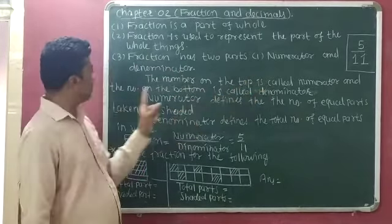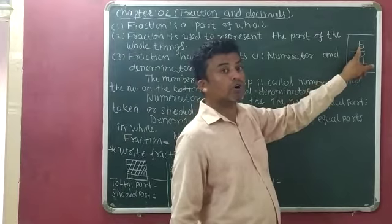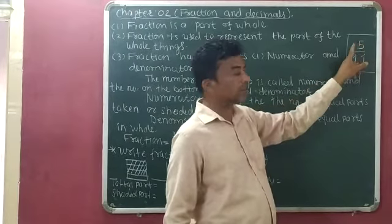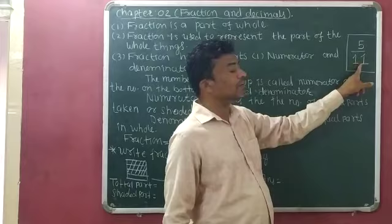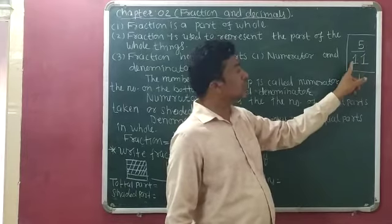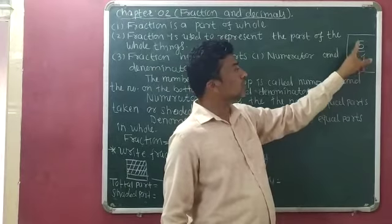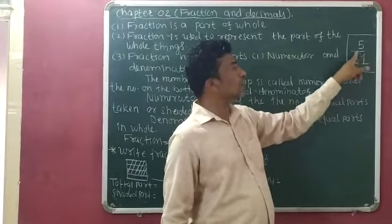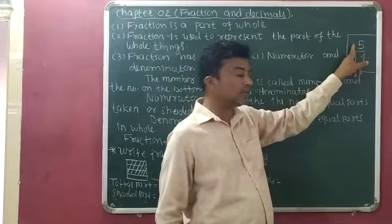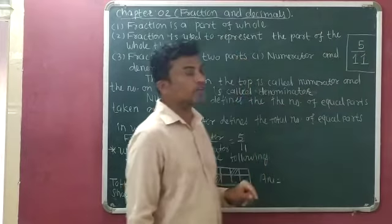See children, take 5 by 11. Here 5 is available on top, so 5 is the numerator, and 11 is available on the bottom, so 11 is the denominator. So in 5 by 11, 5 is the numerator and 11 is the denominator.